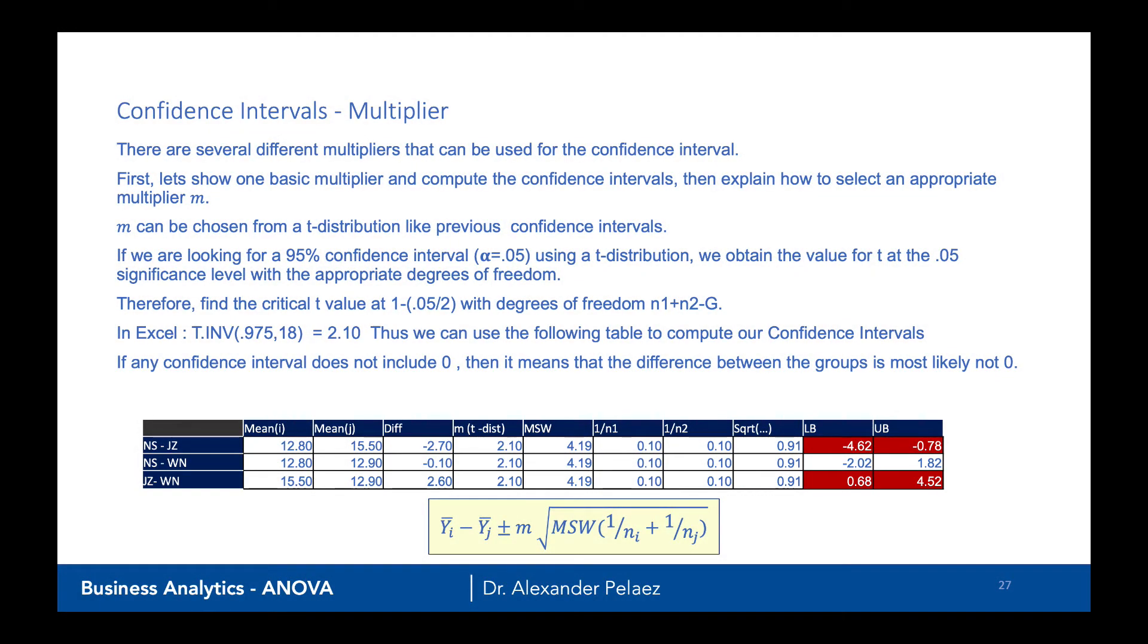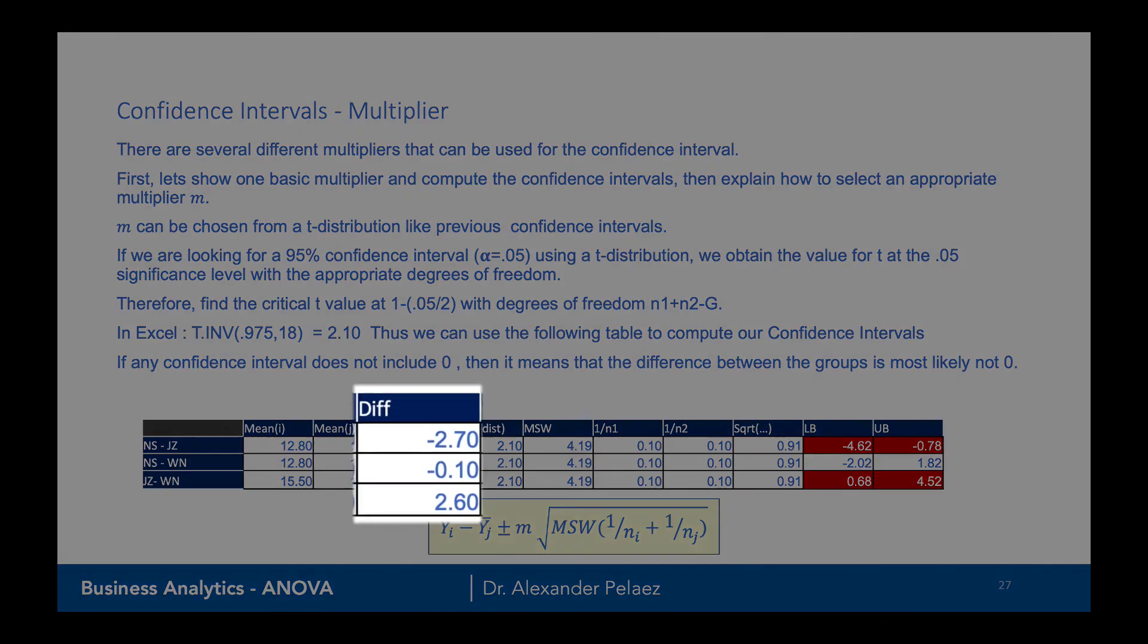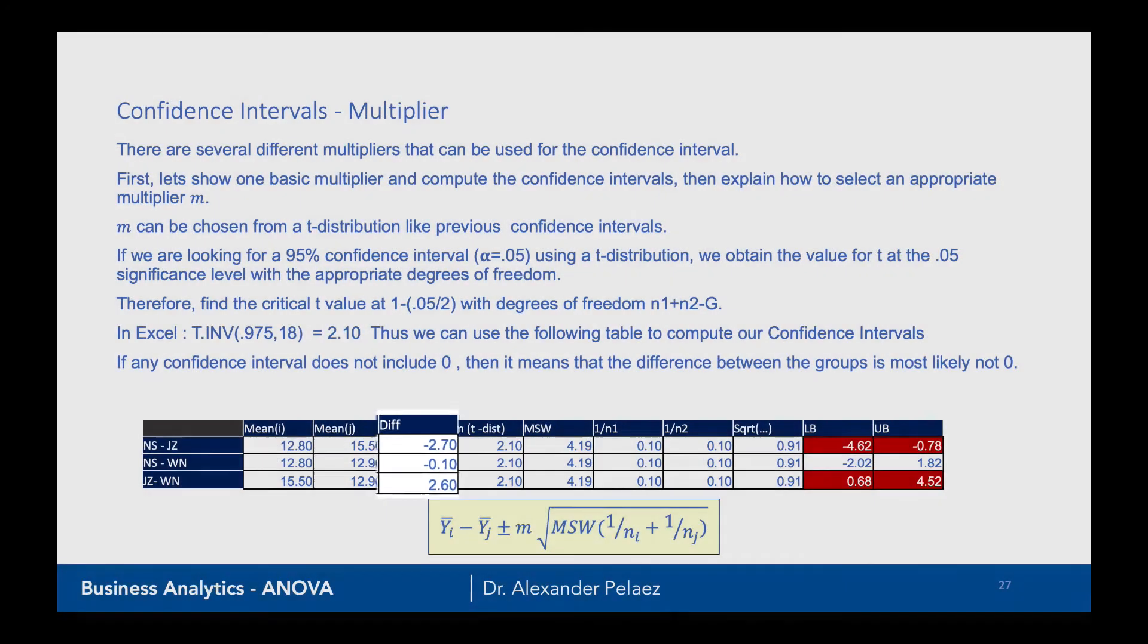You can see that difference column in the third column here. It's pretty clear that it lies in between the lower bound and the upper bound, which is where it should. If it doesn't, you should check your calculations.